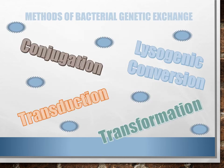Bacteria use one of four methods to transfer genetic material: conjugation, transduction, transformation, and lysogenic conversion. Bacteria are similar to humans in the way sex cells reproduce — they shuffle genetic information. Humans use crossing over; bacteria use recombination. Recombination is the key feature of genetic transfer among prokaryotes, enabling formation of new gene combinations by either natural or artificial means.